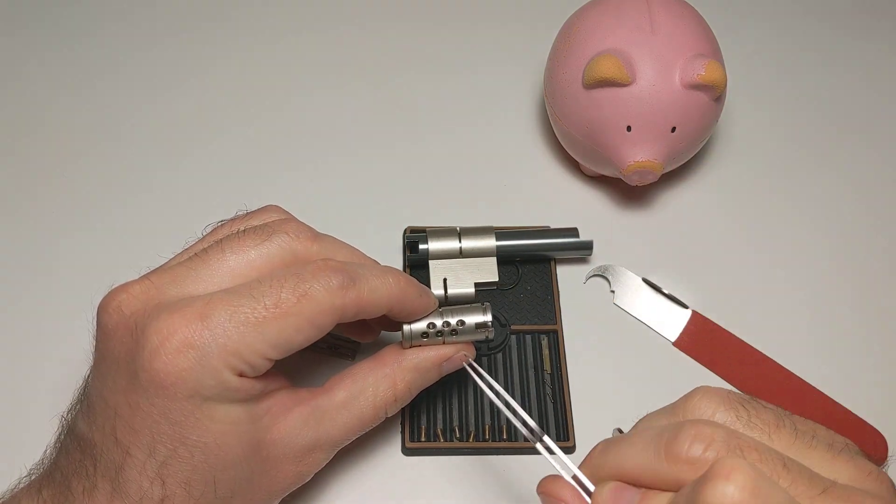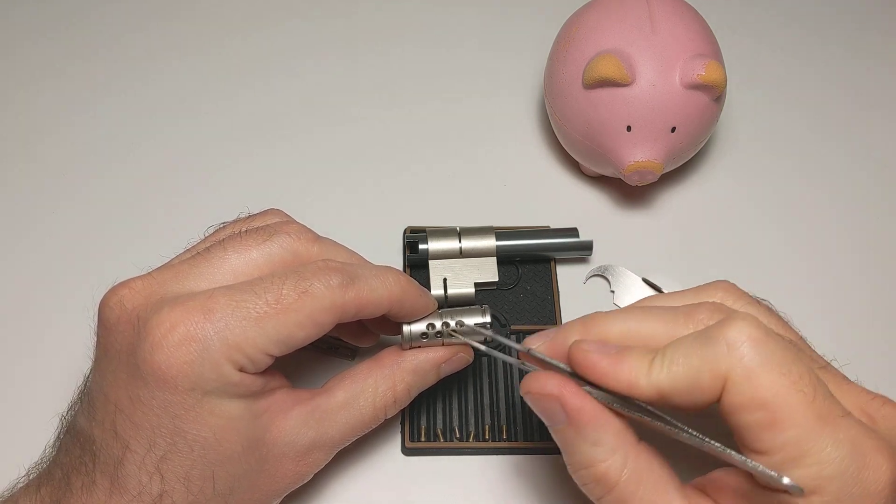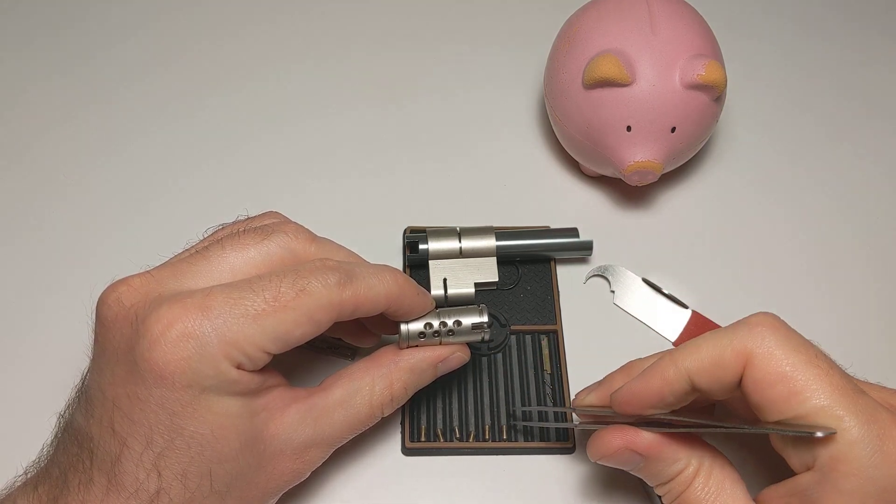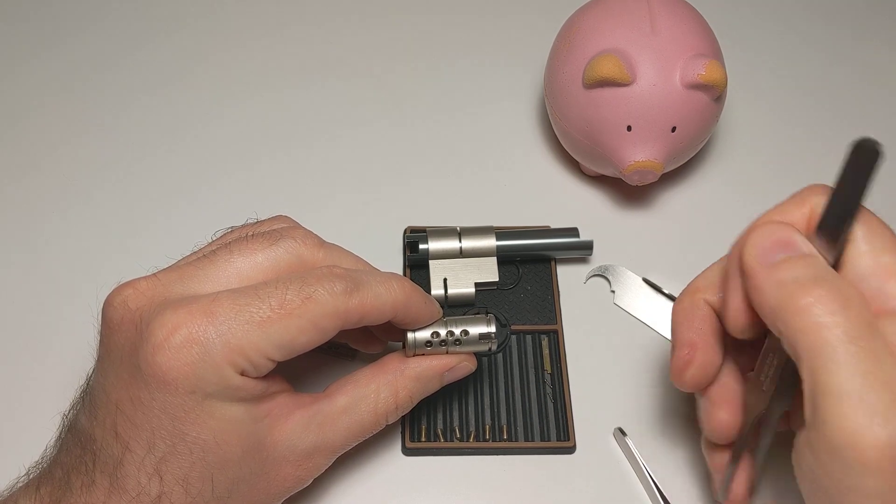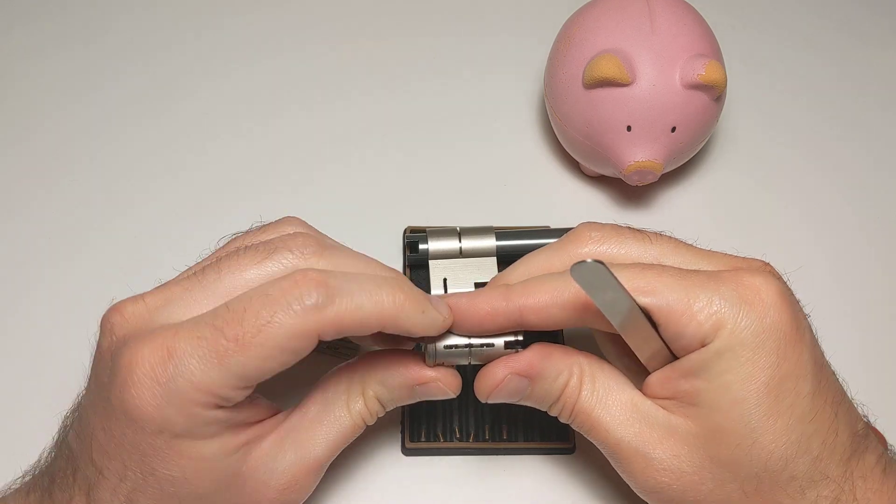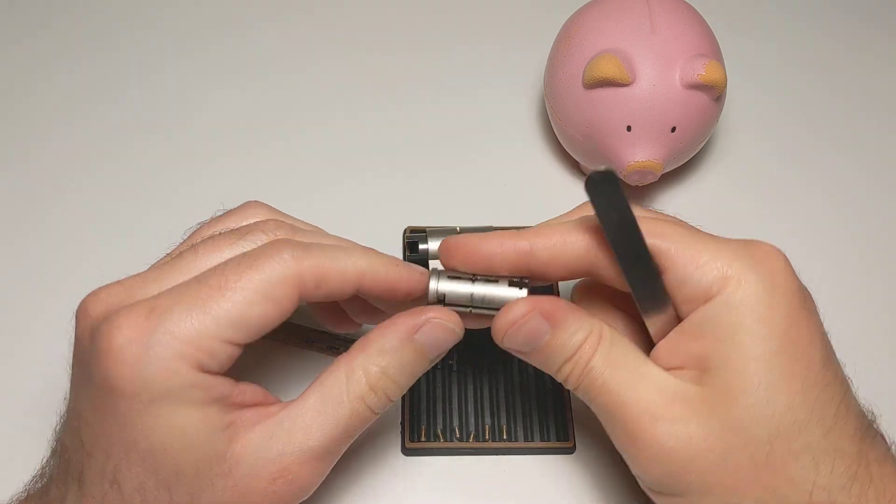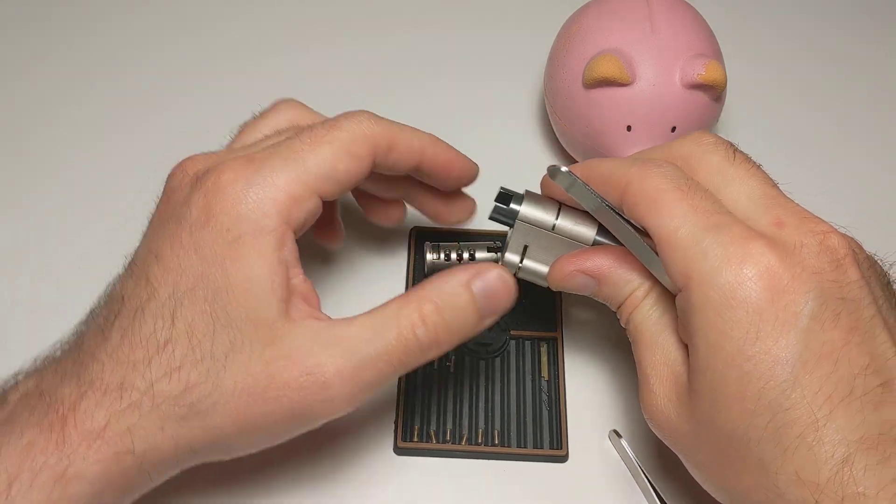There's not really anything special about the plug aside from there's a little shelf milled into each hole and a little shelf on each bottom pin so that they don't go too deep into the keyway. Slot for the sidebar, that's really it. There's some drill protection in the front. Alright, let's get the top pins out now.